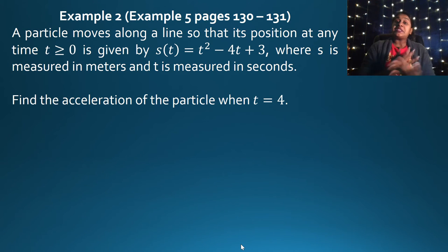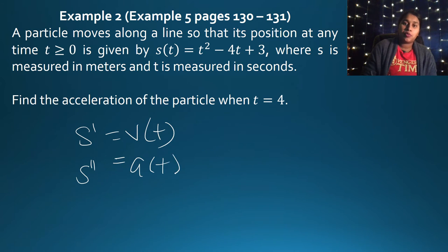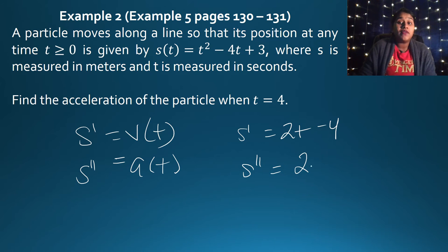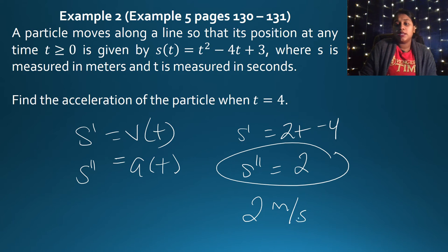To find acceleration, velocity was S prime equals 2T minus 4, so acceleration is S double prime, which equals 2. There's no more variable, so acceleration is 2 meters per second squared everywhere — whether T equals 4 or any other value.